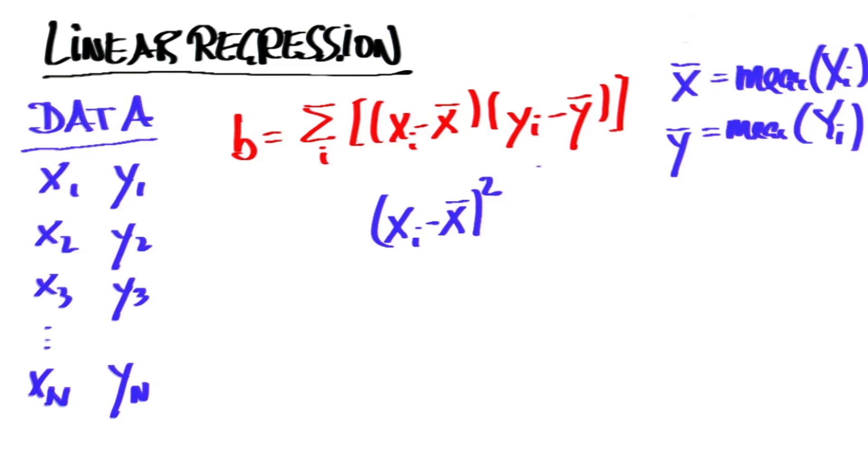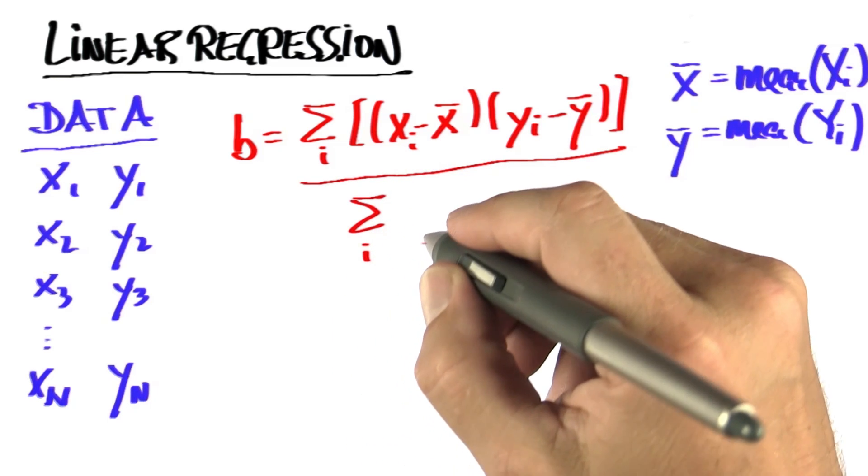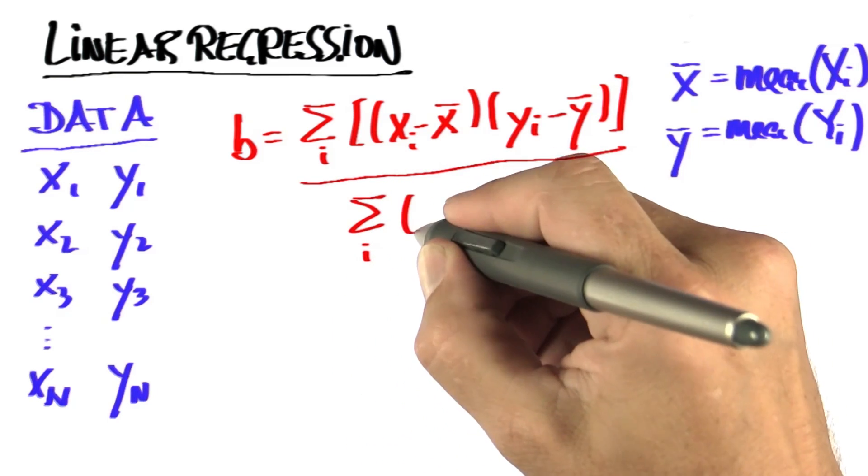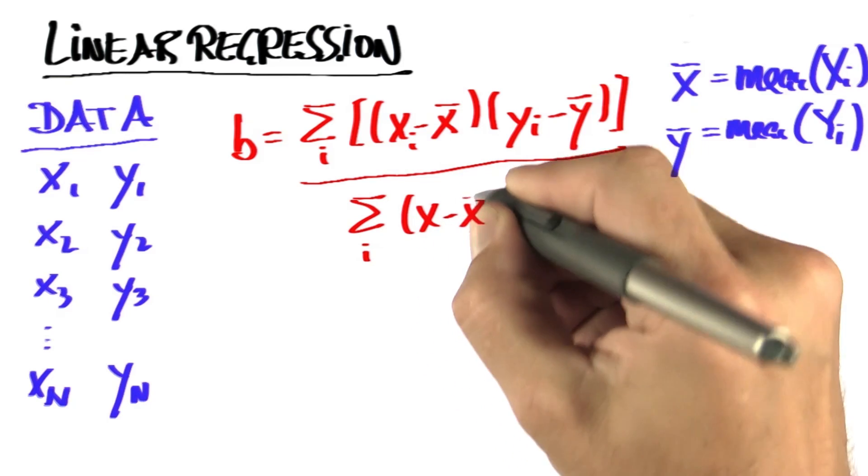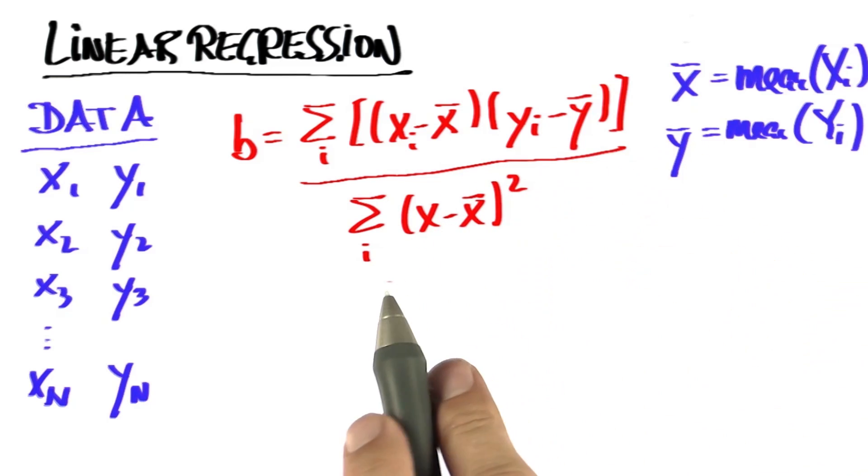So it's similar to computing a variance. The last thing we'll do is normalize this thing. Before, we often normalize with n, but now we're going to normalize with something else. We normalize with a term that very much reminds us of the variance.